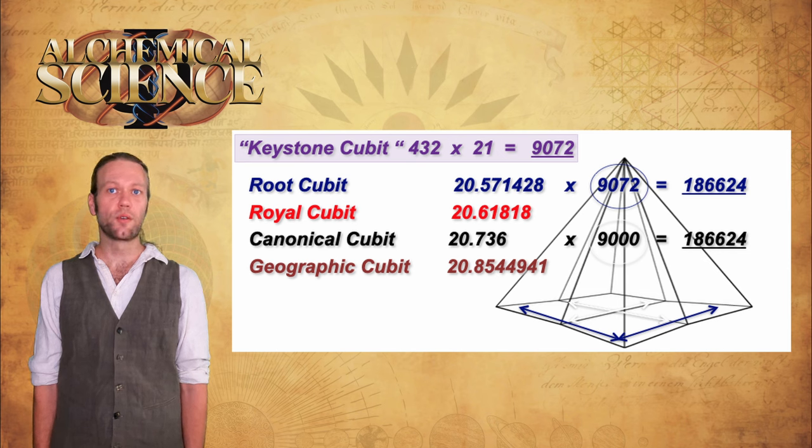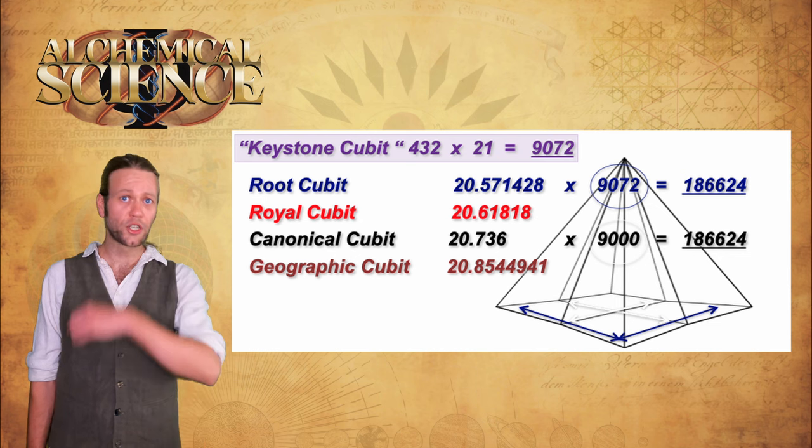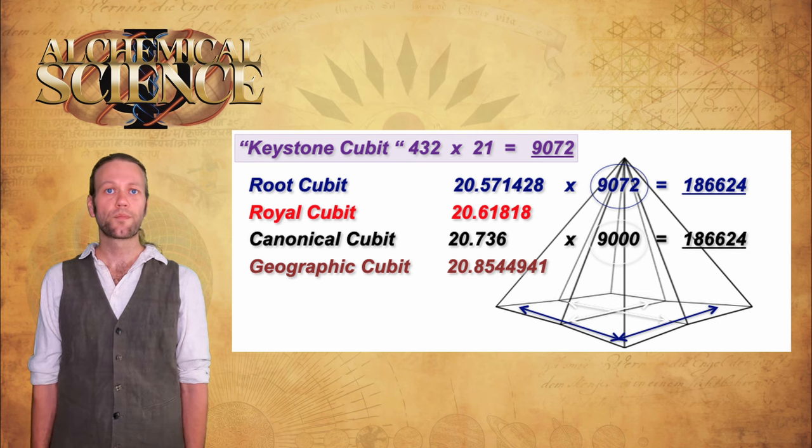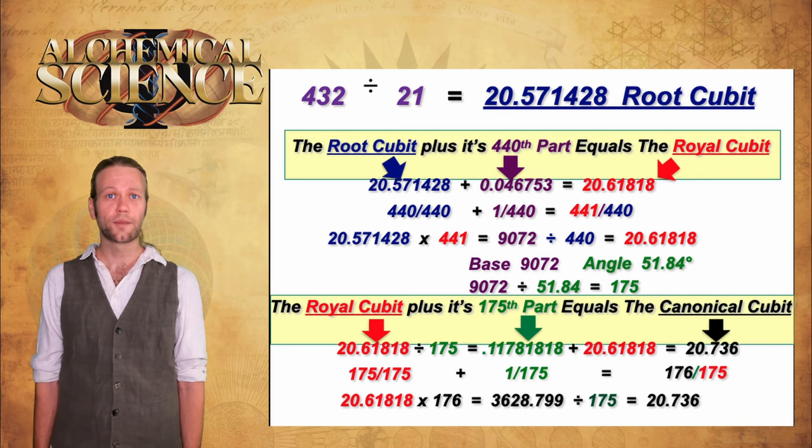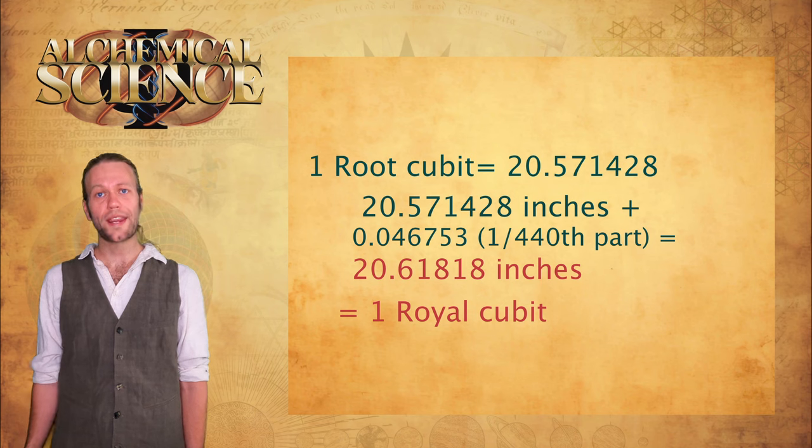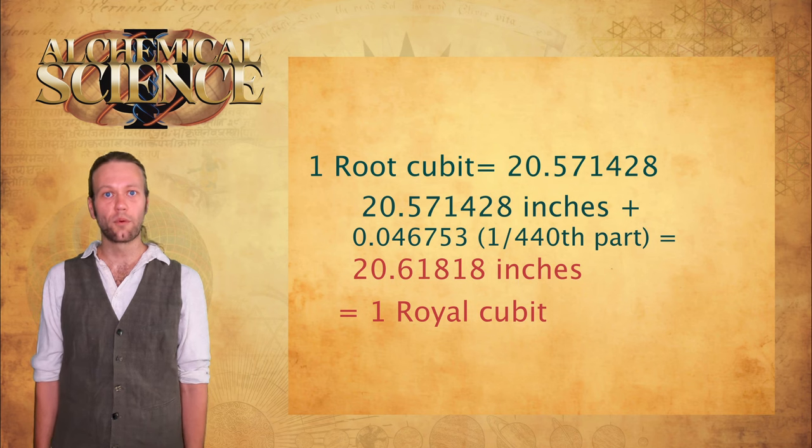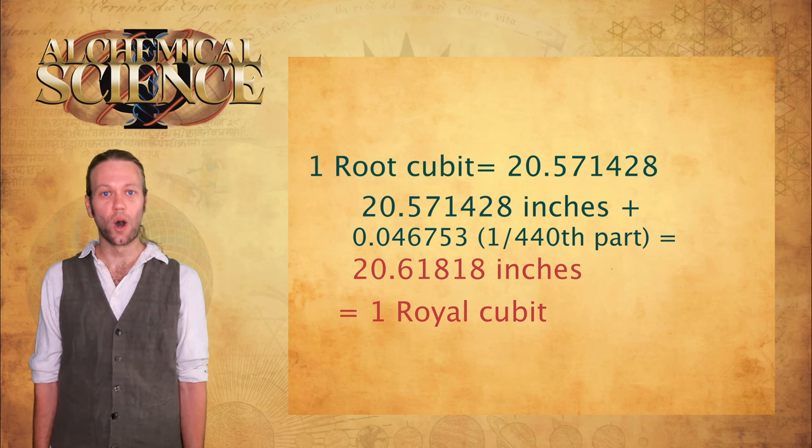A similar approach seems to have been used in the case of the cubits, the root cubit and the royal cubit. The royal cubit is an adjusted value used to refine the tuning of the measurements used for actually building the structure. The root cubit shows us how these measurements can be mathematically derived from the harmonic doubling and tripling sequence. Ed has decrypted the mathematical relationship between the root and royal cubit, showing that the royal cubit equals the root cubit plus 1/440th part. So 20.571428 plus 0.046753, 1/440th part, equals 20.61818, which is 1 royal cubit.